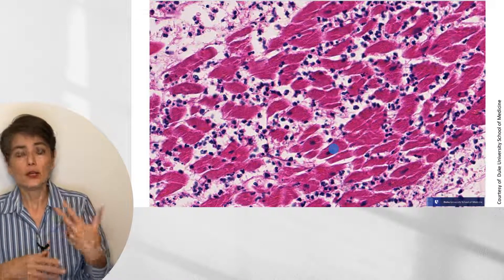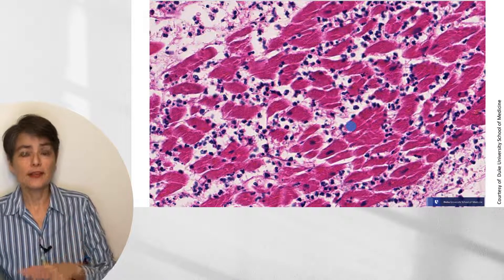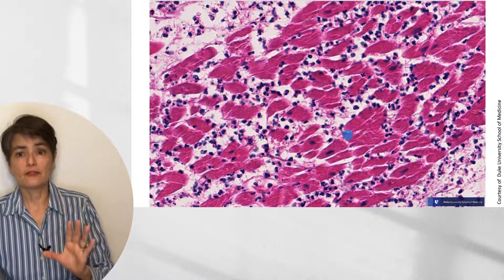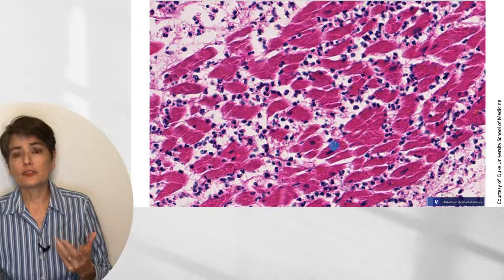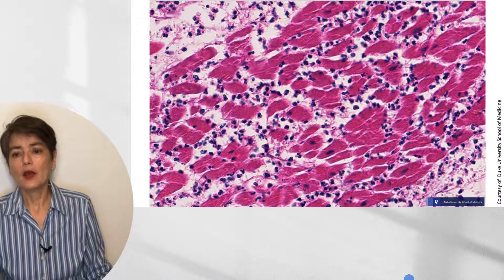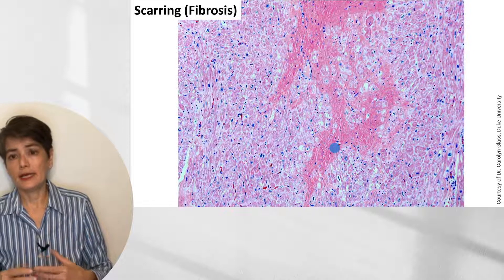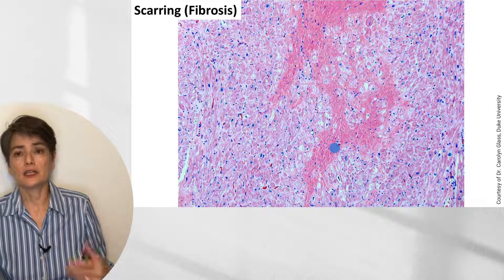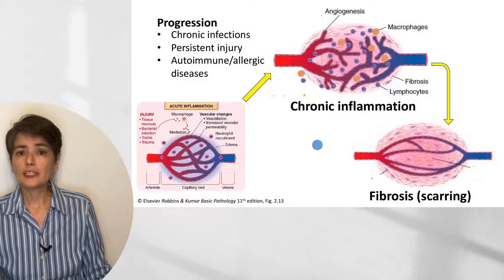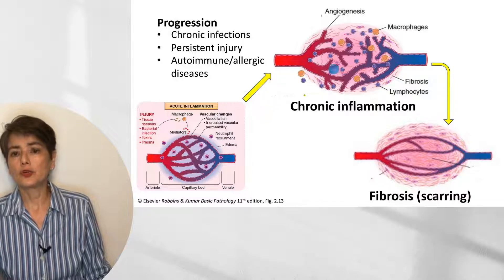You will learn in the chronic inflammation video that neutrophils can also appear there, but a sea of neutrophils like this unambiguously signals acute inflammation. With this degree of destruction — all necrotic tissue — cardiac myocytes cannot regenerate, so we end up with scarring and fibrosis. That collagen deposition impairs contractility of the heart, and if it involves a pacemaker area, it can affect conduction leading to arrhythmias. When acute inflammation cannot be cleared — due to chronic infections, persistent injury, or autoimmune and allergic diseases — we progress to chronic inflammation.